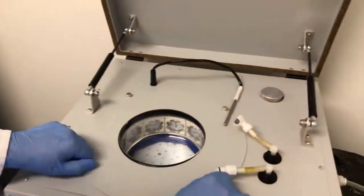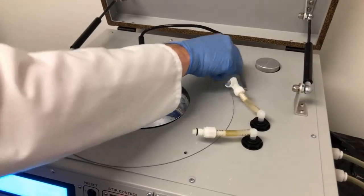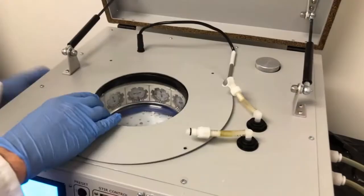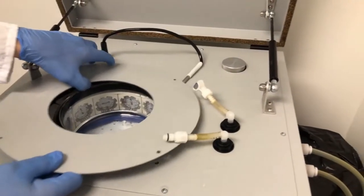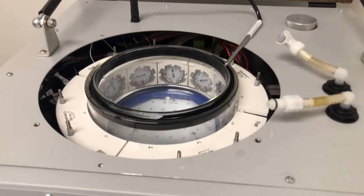If you want to access the light modules, remove the thumb screws on the plate surrounding the reaction chamber. Once the plate is removed, it's easy to lift the reaction chamber out if it needs cleaning, or to get better access to the LED modules.